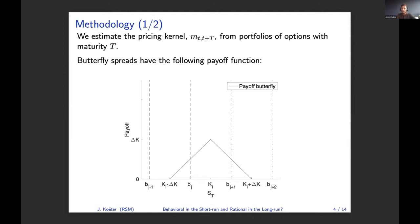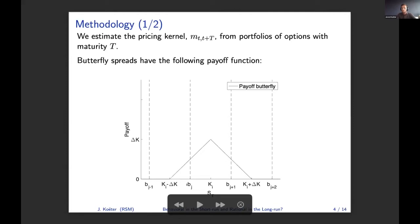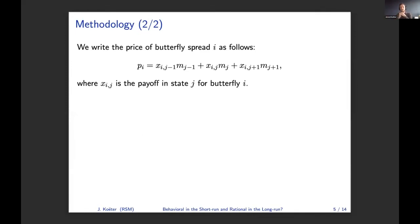What we're doing is we discretize the payoff space in our estimation. We're going to say that the payoff of this butterfly spread in state j minus one is going to be the expected value over the interval from bj minus one up to bj. Similarly, in state j, the payoff of a butterfly spread is going to be equal to the expected value over the interval from bj to bj plus one. The price of this butterfly spread will be the payoff in each of these states — in our example, three states, but this is without loss of generality.